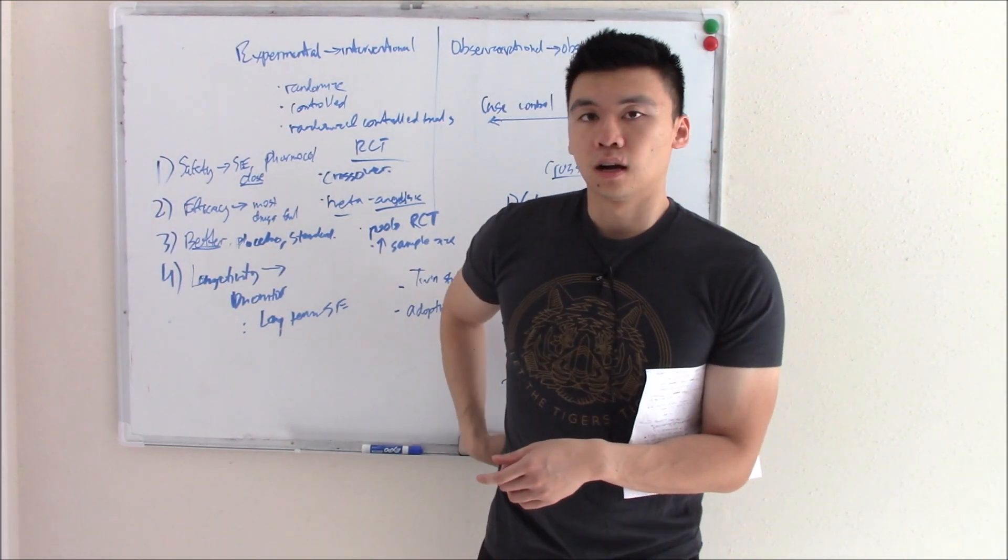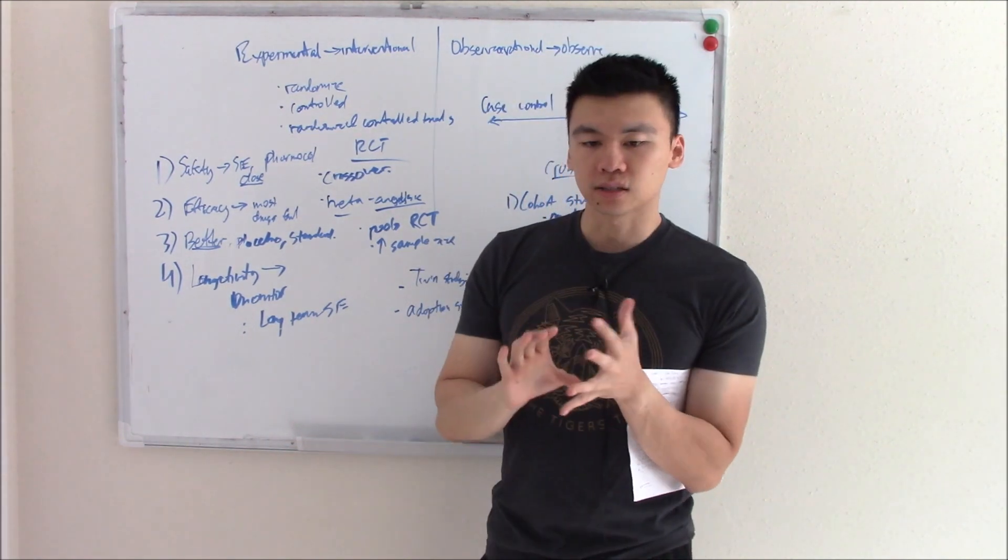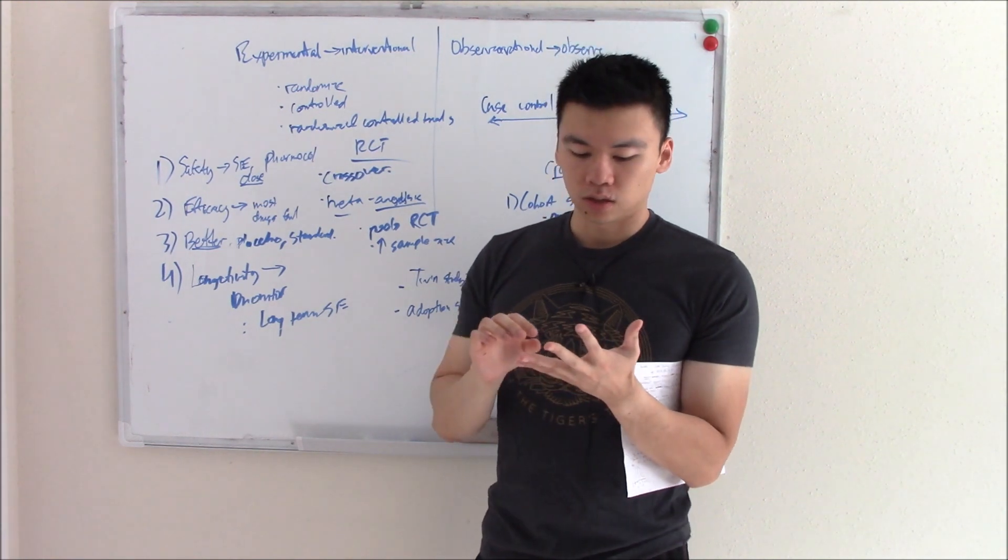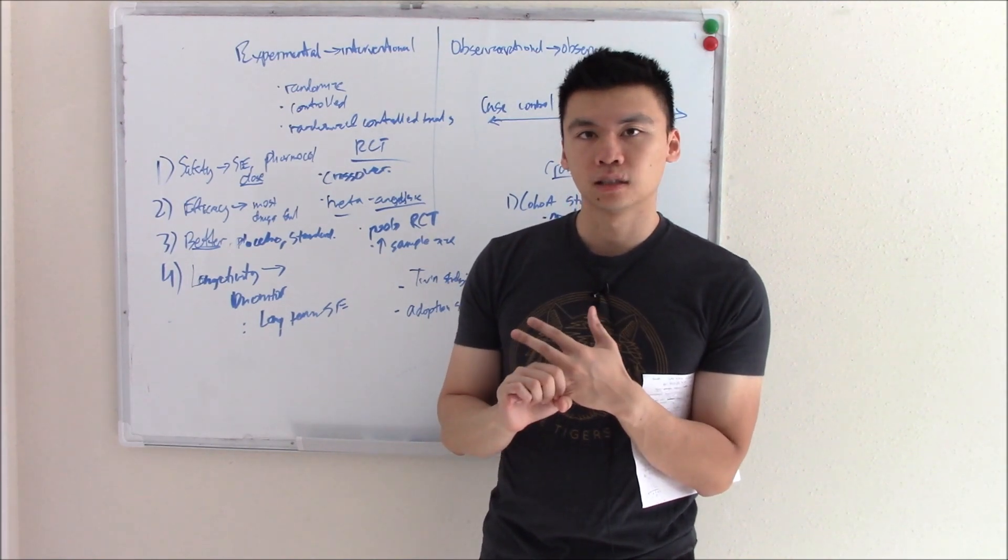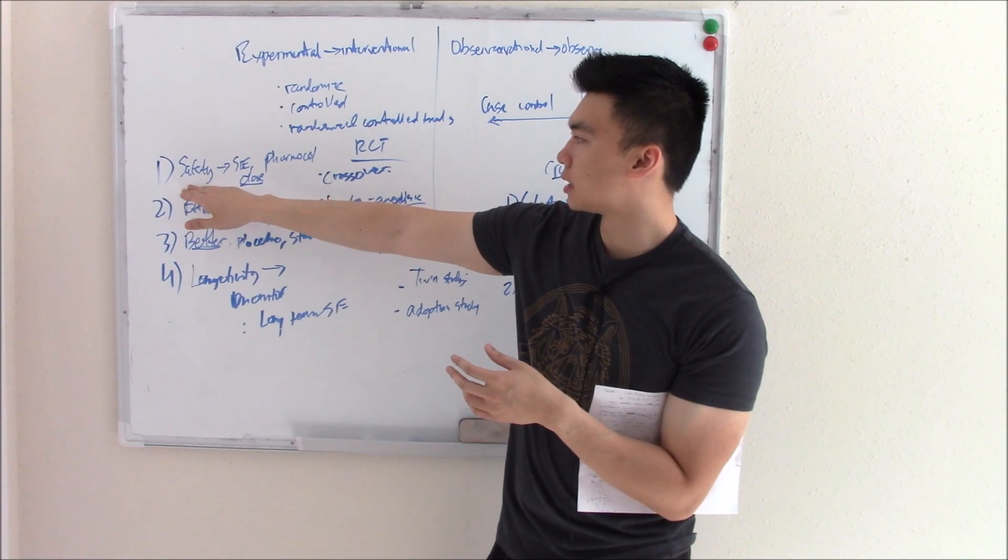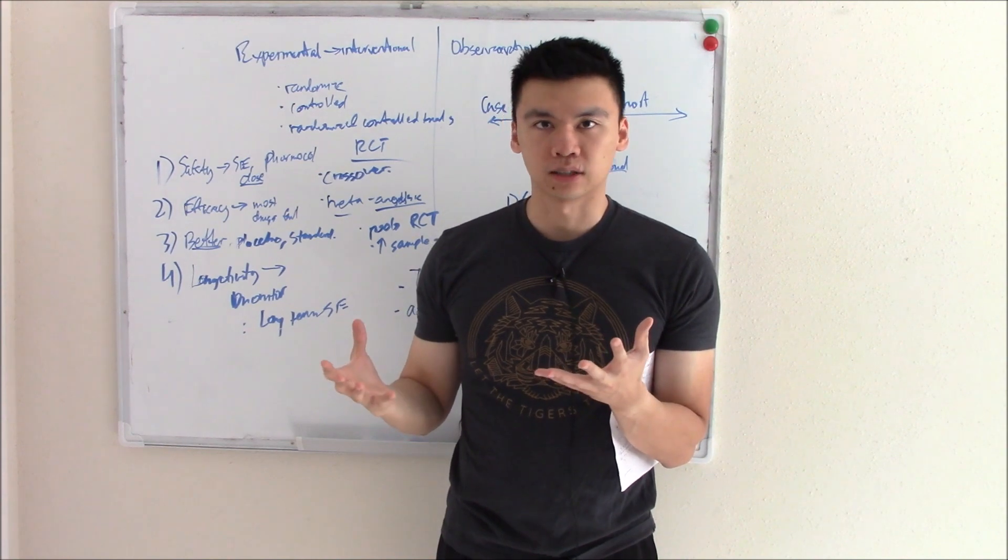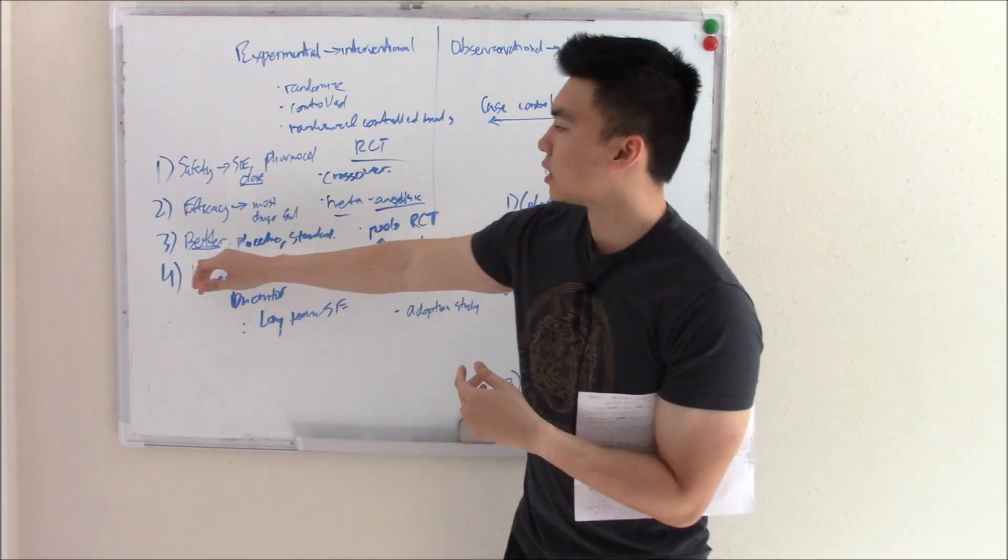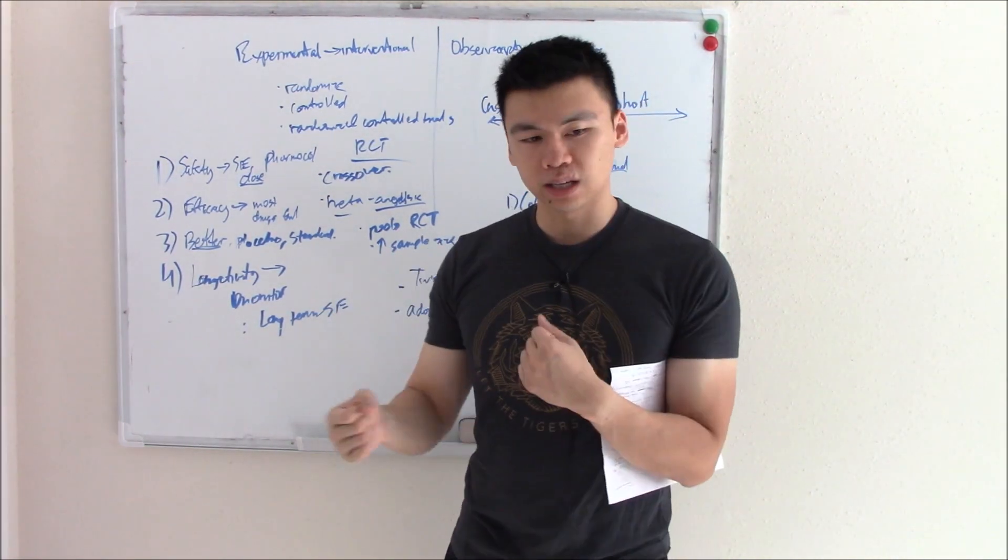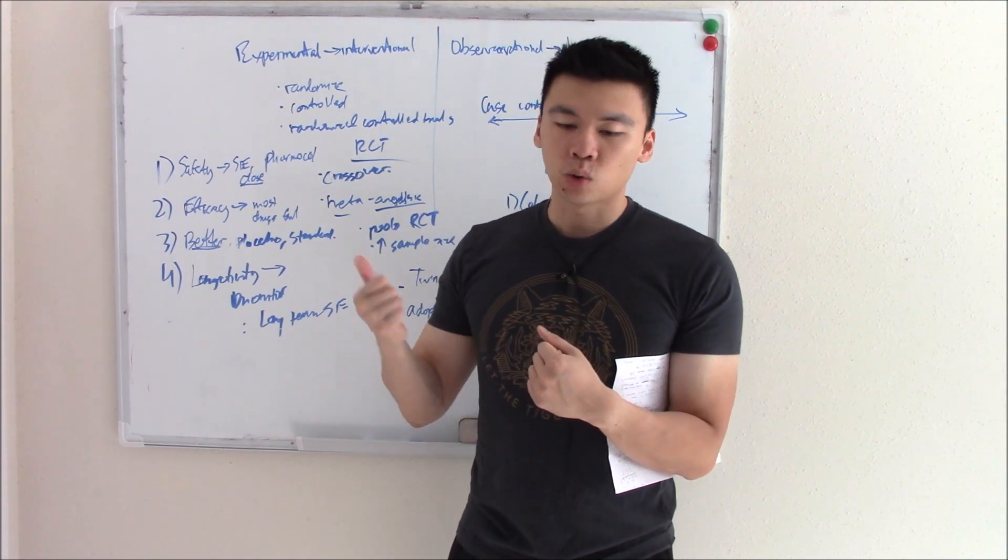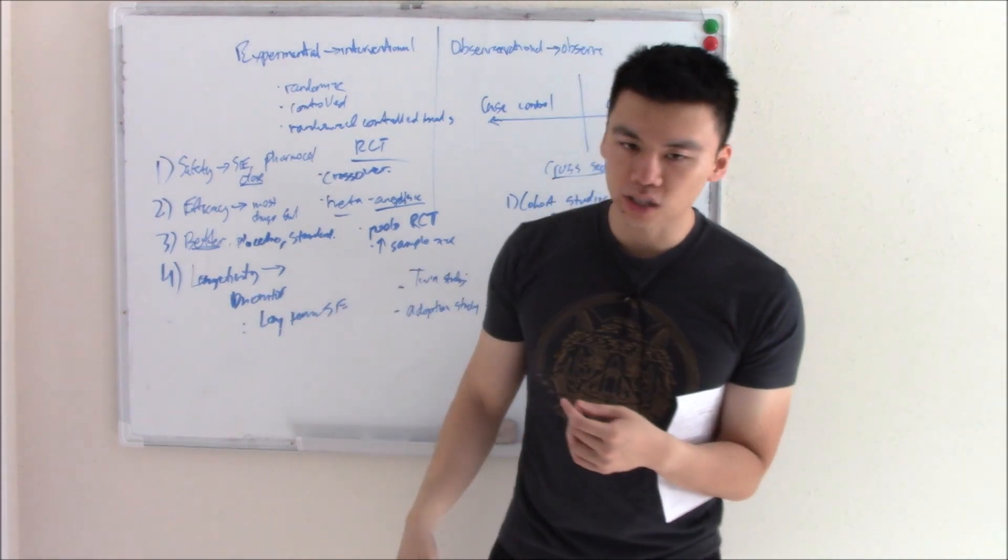So those are the stages of experimental trials. Now, how do they like to ask on the board? That's probably the most important question. They'll say a researcher made a new drug, and while testing the drug, the side effects were too great and they pulled the drug. What stage, what phase did they pull it in? Phase one. That's dealing with safety. Or they made a drug and it performed worse than the national standard. What phase did it fail in? Phase three. It wasn't better. Or they made a drug, everything looked good, they approved it, they sent it out to the market, everybody's loving it, everybody's using it. 20 years down the line, they realized that it caused cancer. What phase? Phase four. That's the way they like to ask it.